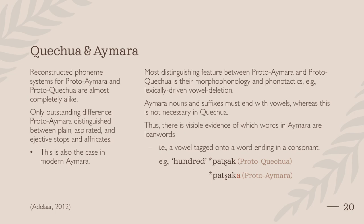From a historical perspective, the reconstructed phoneme systems for Proto-Aymara and Proto-Quechua are almost completely alike. The only outstanding difference is that Proto-Aymara distinguishes between plain, aspirated, and glottalized or ejective stops and affricates, which is also the case in modern-day Aymara. The most distinguishing feature between the two proto-languages is their morphophonology and phonotactics, notably the aforementioned lexically-driven vowel deletion. Furthermore, in Aymara, nouns and suffixes must end with vowels, whereas this is not necessarily the case in Quechua. Assuming this was also true of their proto-languages, there is visible evidence of which words in Aymara are loanwords, based on whether a vowel has been tagged onto a word ending in a consonant.